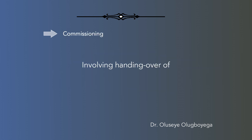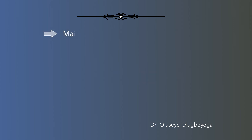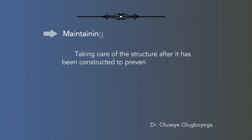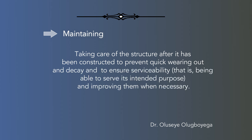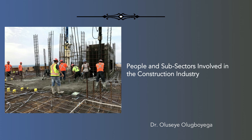Commissioning: involving handing over of the constructed facility to the owner. Maintaining: taking care of the structure after it has been constructed to prevent quick wearing out and decay, and to ensure serviceability — that is, being able to serve its intended purpose — and improving them when necessary.